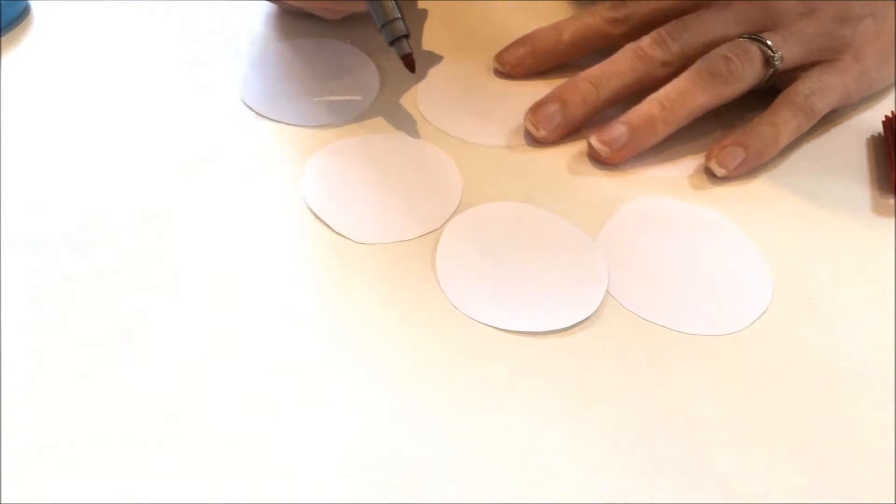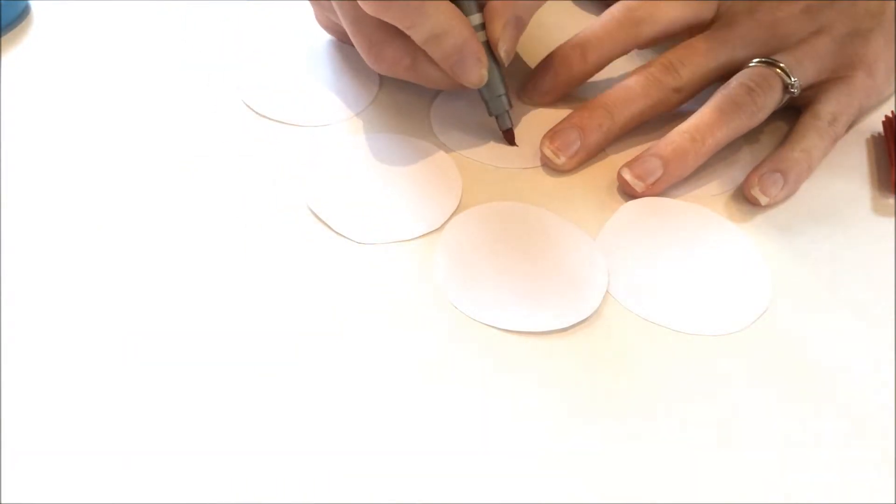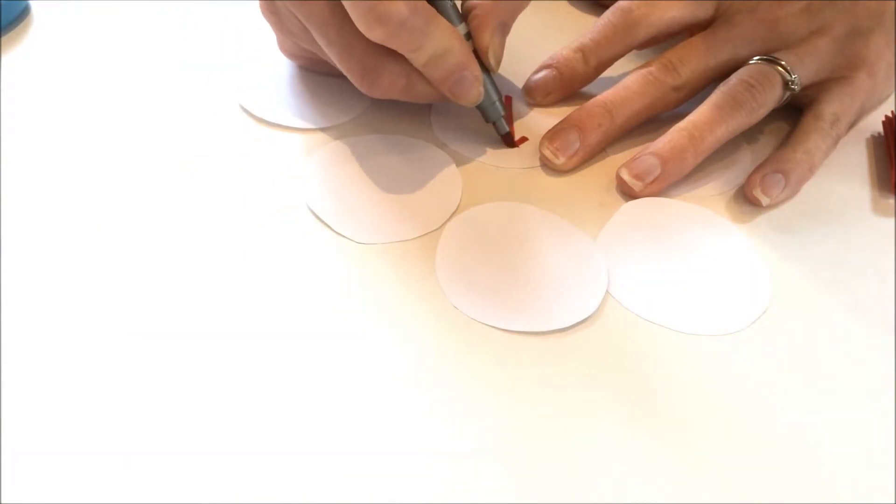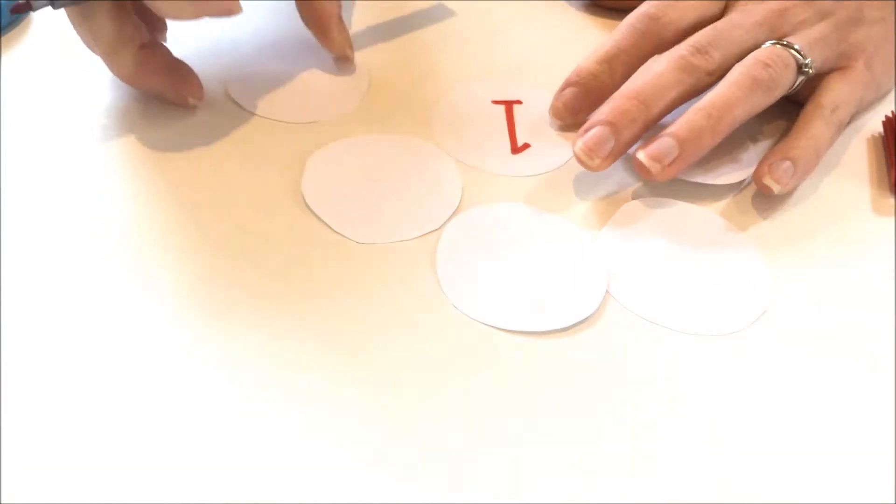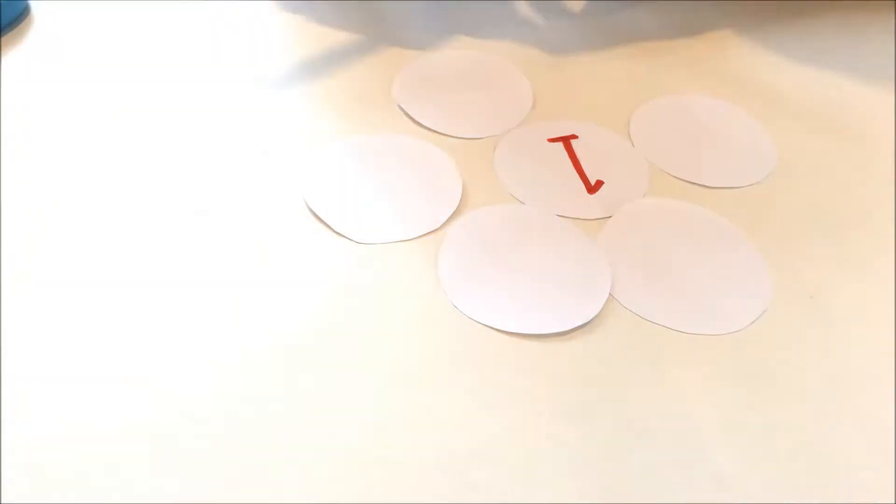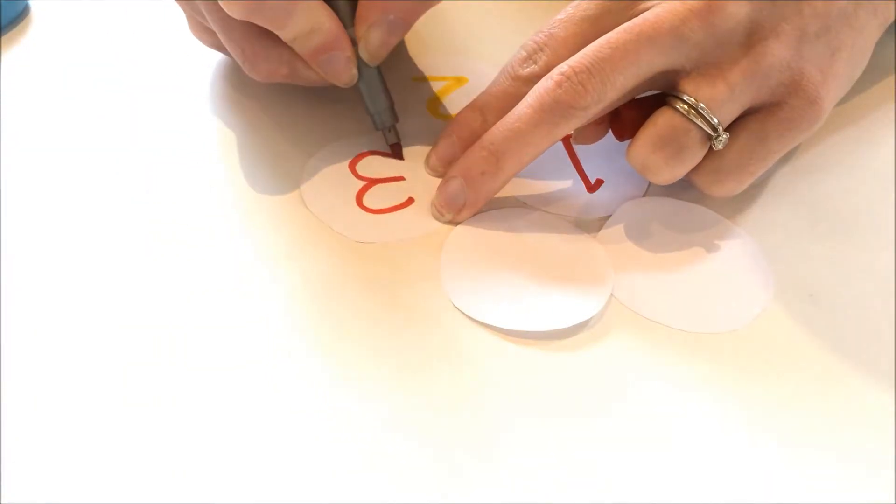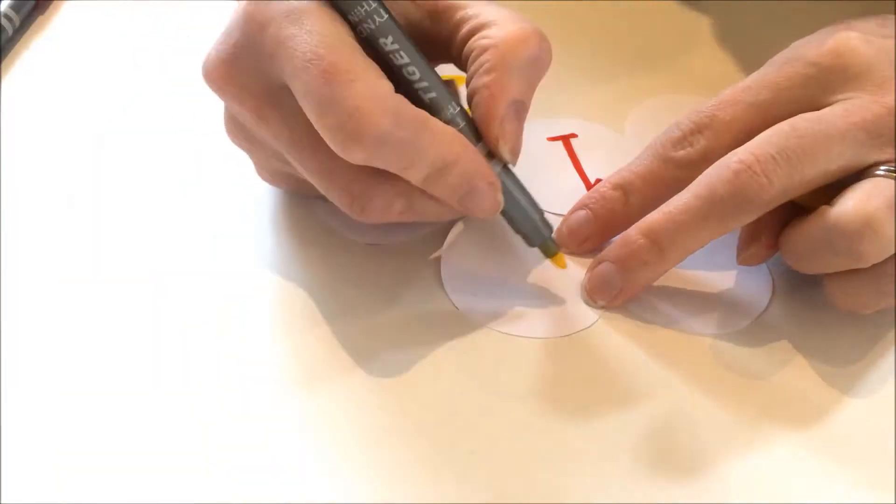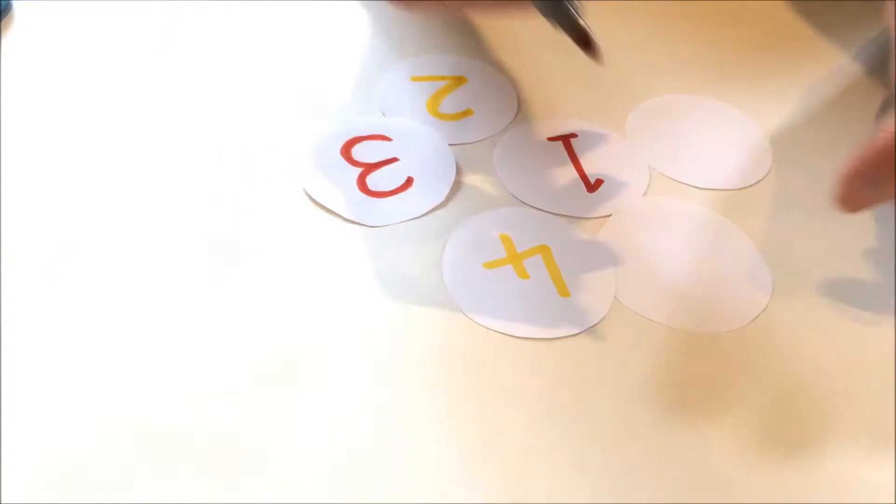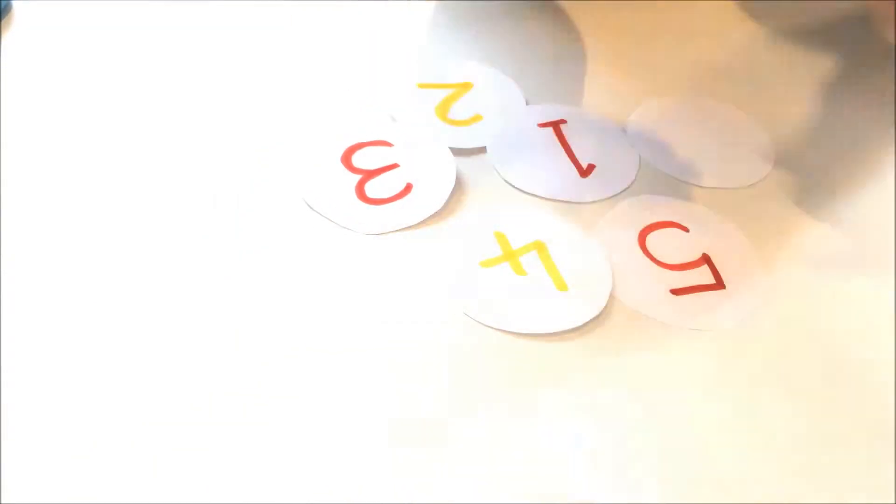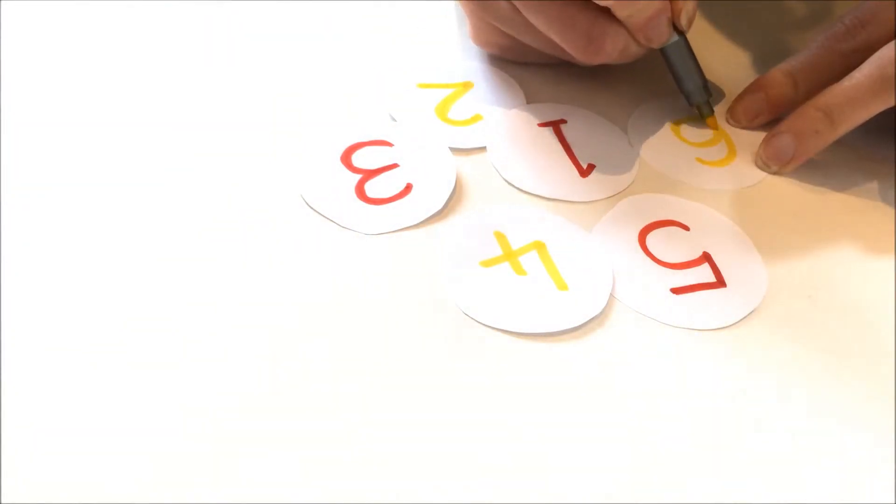Next, take a marker pen and use it to write numbers on each of the circles. For a basic maths table, just write one number on each circle. In this video, I am using red and yellow to represent the colours of Chinese New Year.